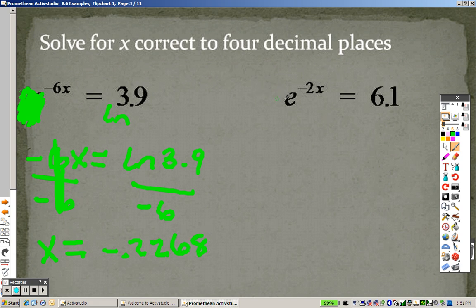Over here, it's the same thing. That's an e, so I take the natural log on both sides. Those cancel, so I get negative 2x equals the natural log of 6.1. And to get x by itself, I divide by negative 2. So the natural log of 6.1 divided by negative 2 is negative 0.9041.